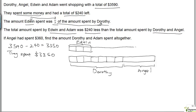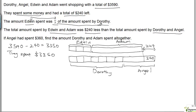Let this be Adam. So this is Adam. The total amount spent by Edwin and Adam is $240 less than the total amount spent by Dorothy and Angel, meaning Dorothy and Angel spent $240 more than Edwin and Adam combined.